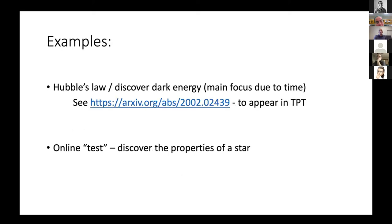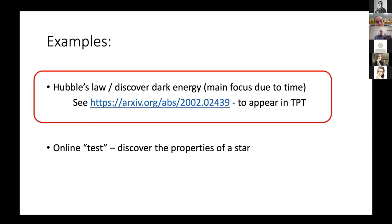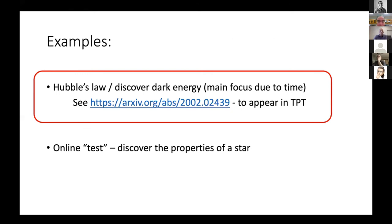This really comes down to the difference between doing science versus being told science. A couple of examples I'll focus on: looking at data for Hubble's law and discovering dark energy — there's a paper appearing in The Physics Teacher with a link provided. At this point in the course, students have already been introduced to basic cosmology: the expansion of the universe gives Hubble's law, where a galaxy's recession speed is proportional to distance, with the Hubble constant giving the age of the universe.